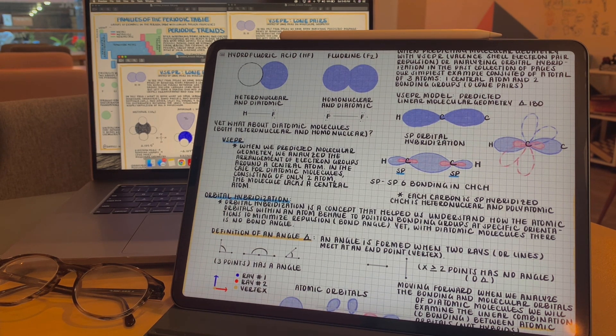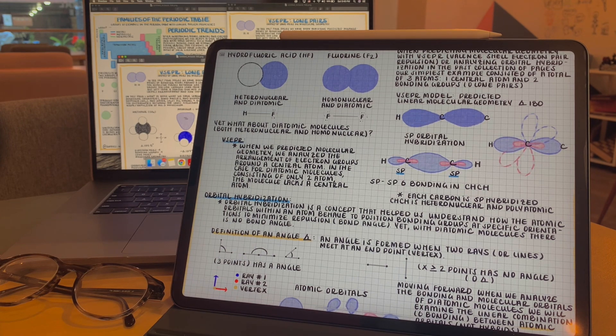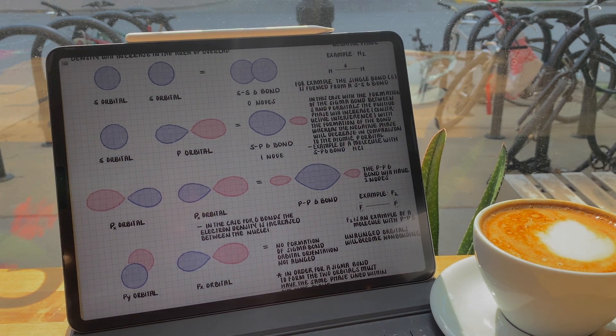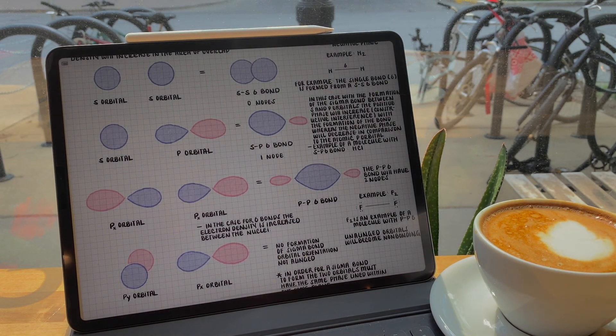So in diatomic molecules, we have no hybridization happening. The only bonding that's happening is between atomic orbitals. The atomic orbitals will linearly combine and form the sigma or pi bonding that we're used to, but we just don't need to hybridize.